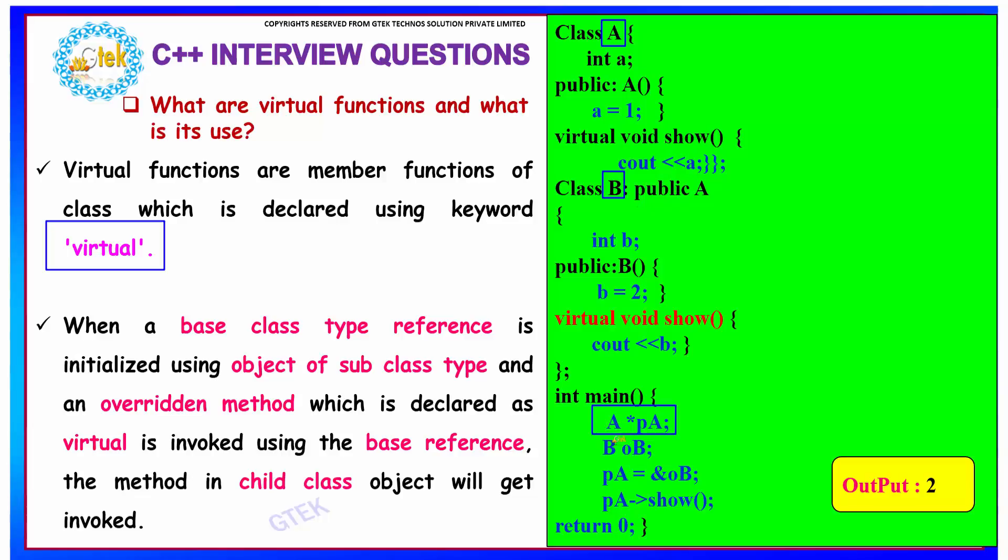I am creating an object for A. So A is created with the reference object. Base class type reference is initialized using your object of the subclass type. For the subclass type, I am creating an object OB and assigning it to the base class reference.